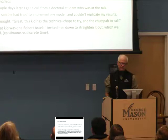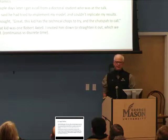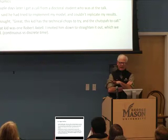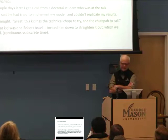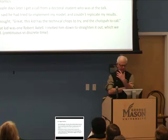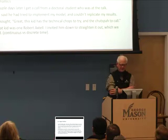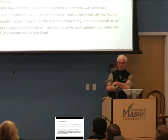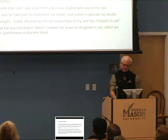About that time, I gave a talk at Carnegie Mellon — Herbert Simon gave one and I gave the other. It was the only time I met Herb Simon. Using nonlinear dynamics, I showed that highly imperfect collective security regimes could stabilize very volatile arms race dynamics. A couple days later, I got a call from a doctoral student who was at the talk. He said he tried to implement the model and couldn't replicate the results. I thought: this kid has the technical chops to try to replicate the thing, and the chutzpah to call me and say he couldn't do it. The kid was Rob Axtell. I invited him down to Brookings to straighten it all out, which we did.